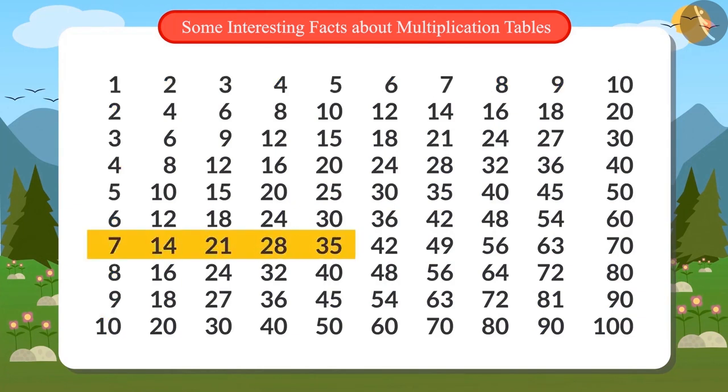Similarly, the seventh line from left to right is the table of 7, and so is the seventh line from top to bottom.